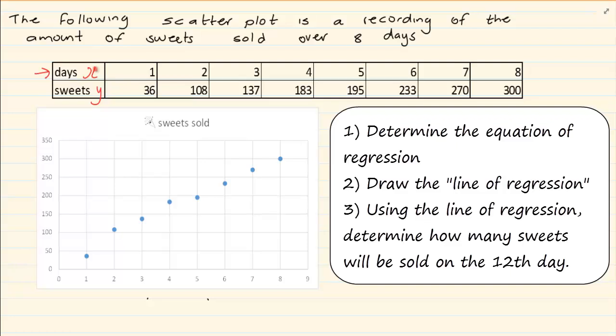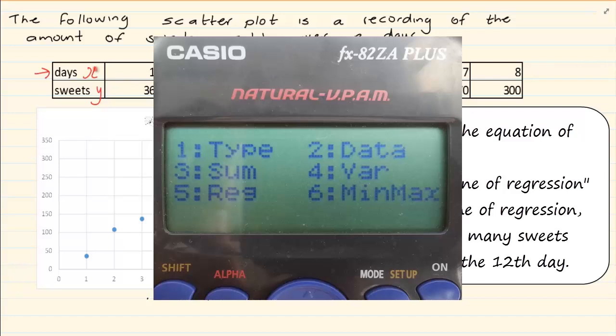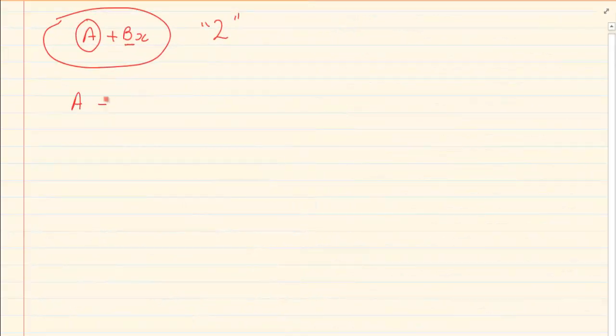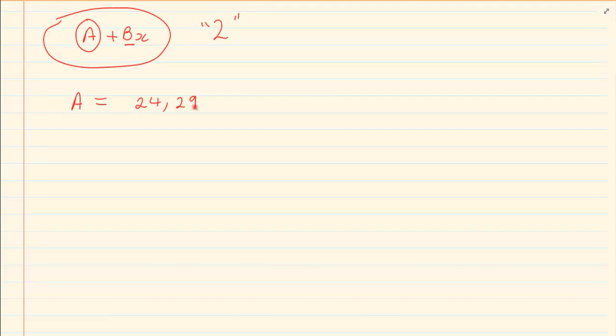You are going to press shift 1. Now under that you are going to look at the one that says REG, regression. So you are going to press 5 and then it will tell you number 1 is for A, number 2 is for B, number 3 you are going to do later. But those are the 3 that we use. So what we are pressing first is we want to know what is A. So you are going to press 1 equals and it will tell you that A is 24,29 rounded off. It is 24,285 but we are going to round it off to 24,29. Then you are going to press AC again, shift 1, 5 but now you are going to press number 2 because we want B. And then it is going to tell us that B is equal to 35,21.